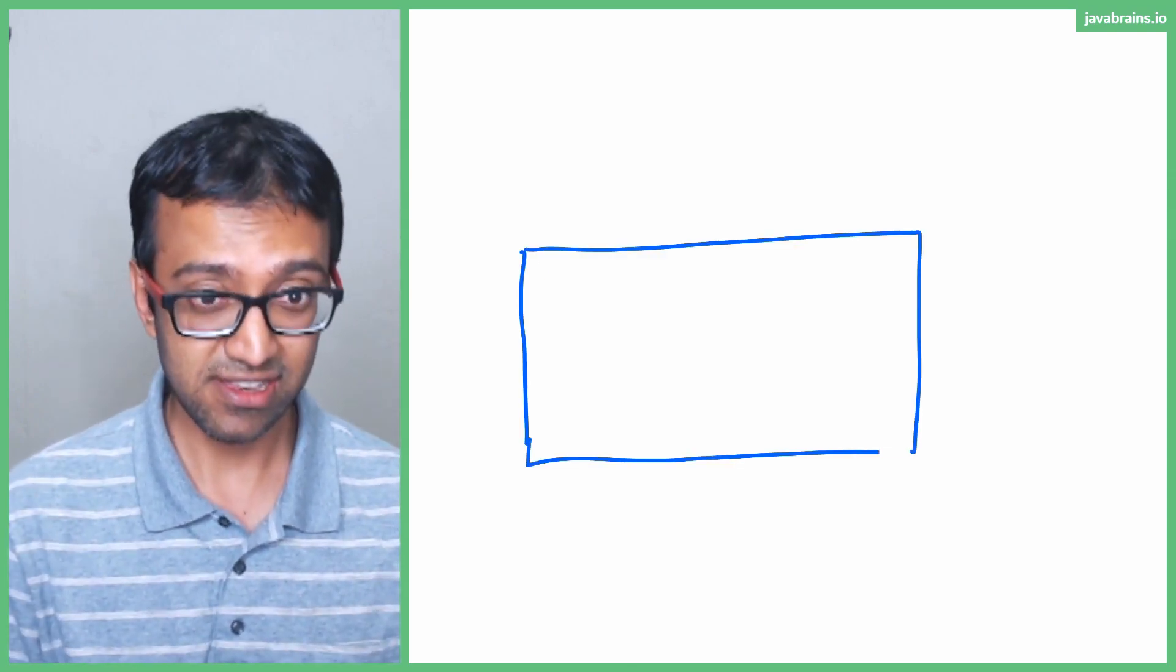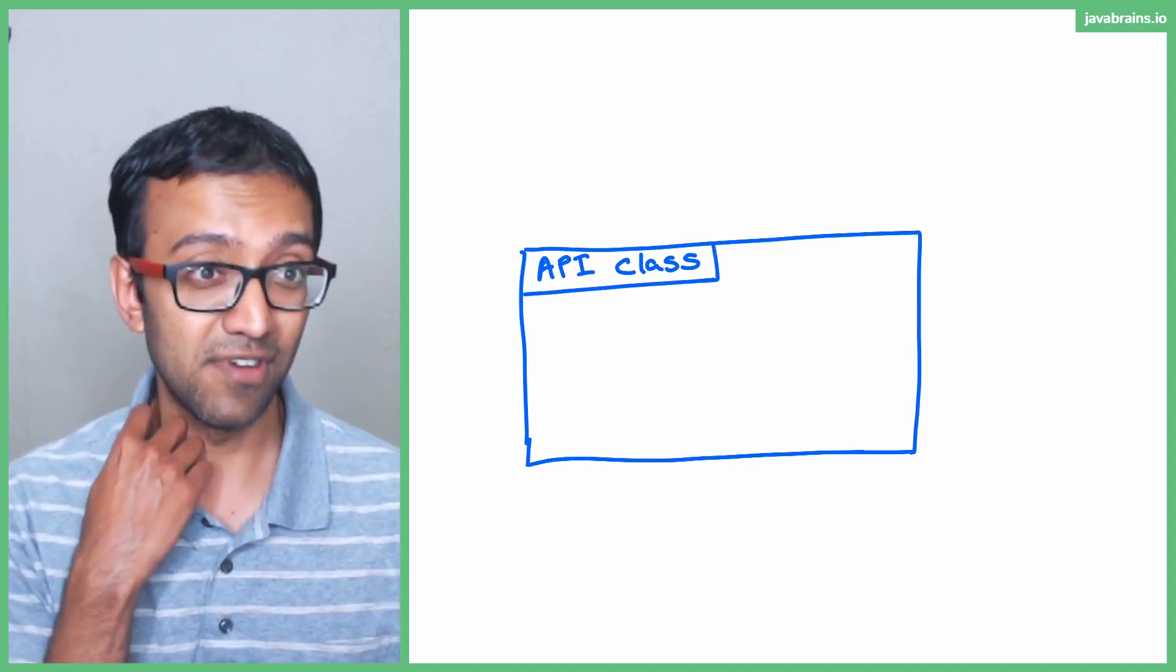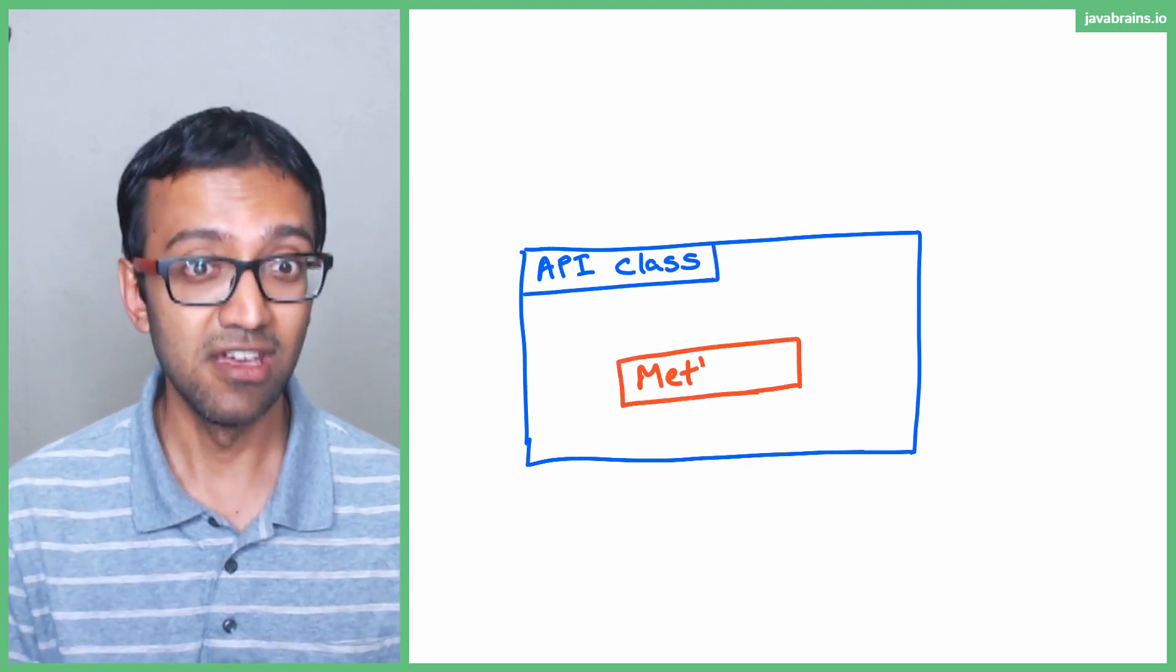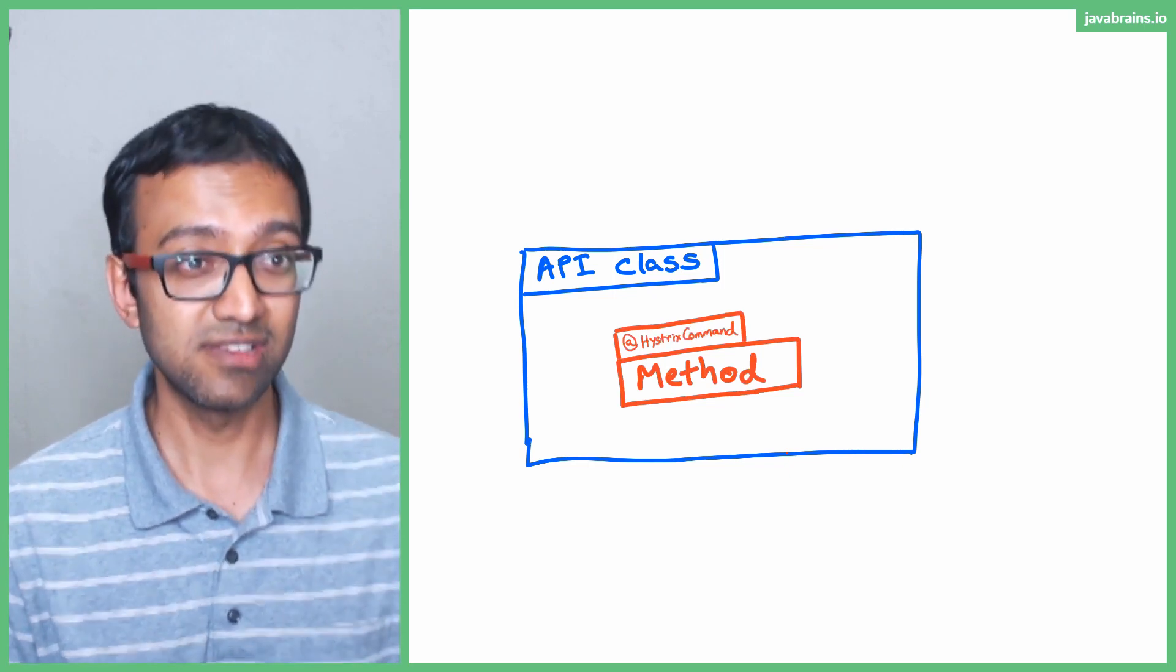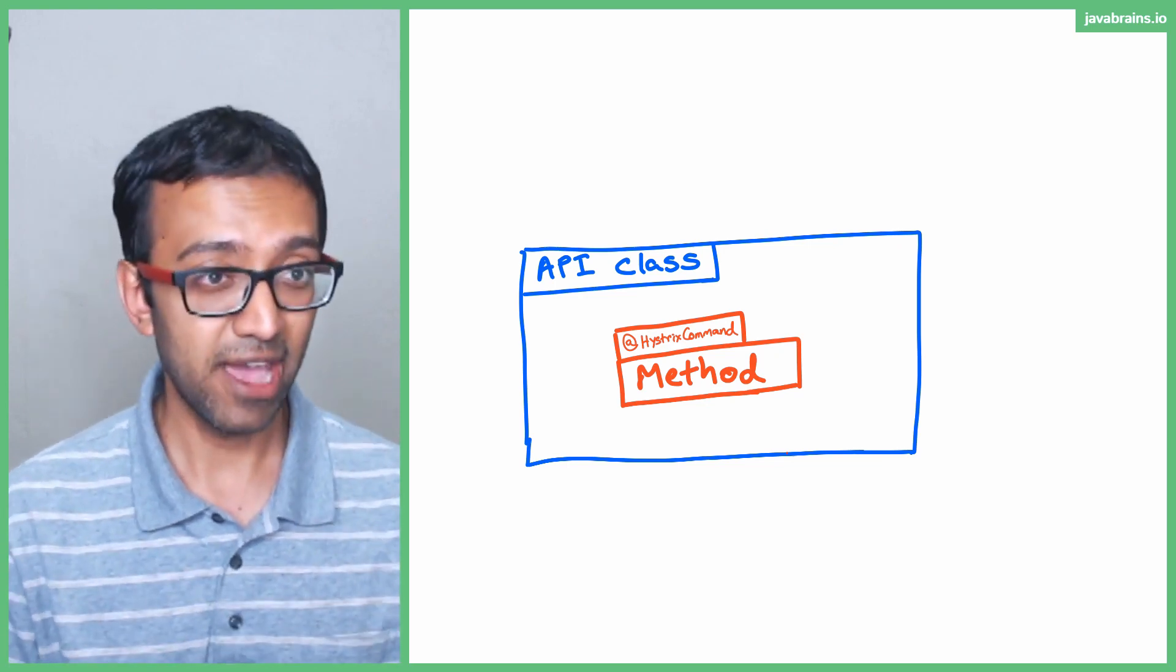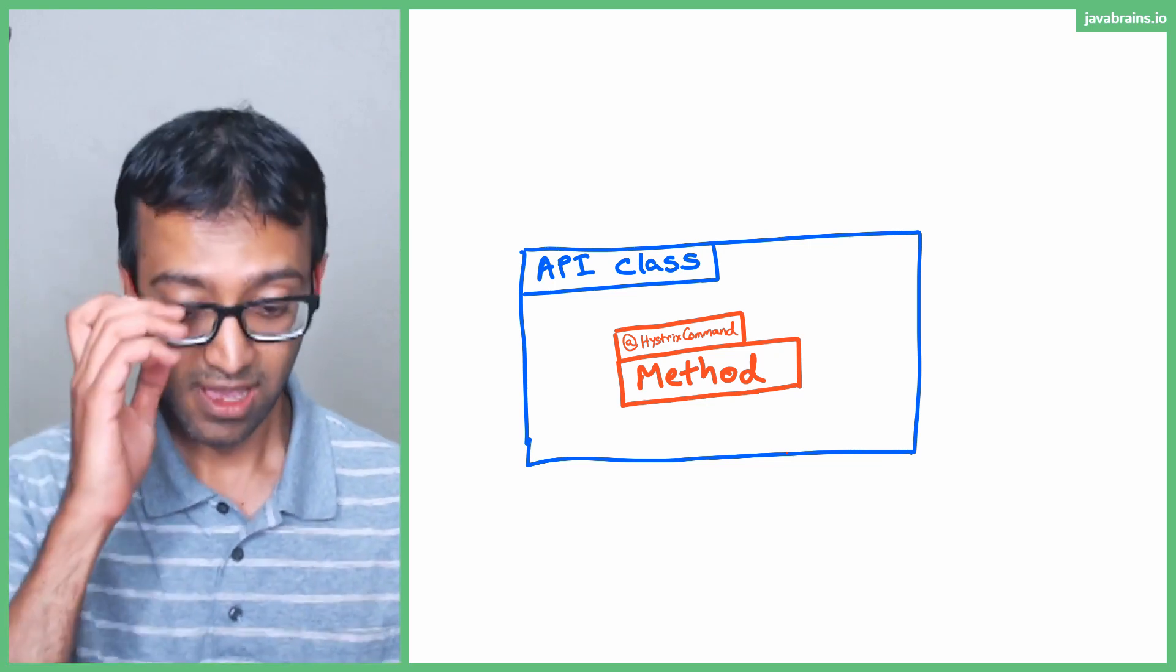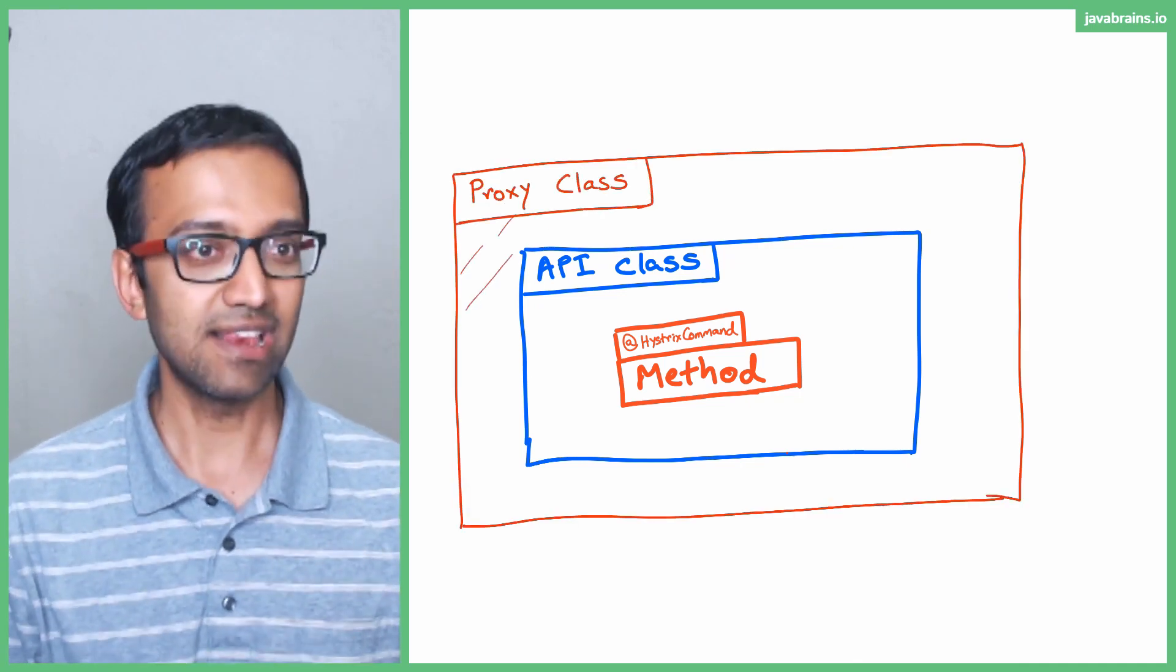It's basically how anything works in a Spring framework, a whole lot of proxying. Let's imagine this. Let's say you have your API class. You have a method inside that API class which you've annotated with a Hystrix command. You say okay, this thing needs circuit breaking. I'm going to give this as a fallback. Now what does Hystrix do? Hystrix actually wraps your class in a proxy class.